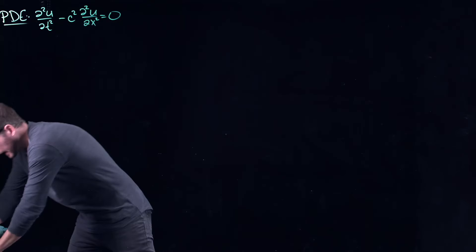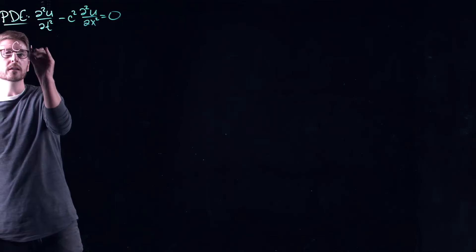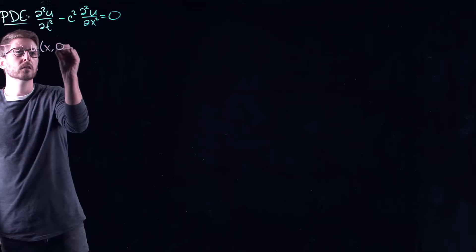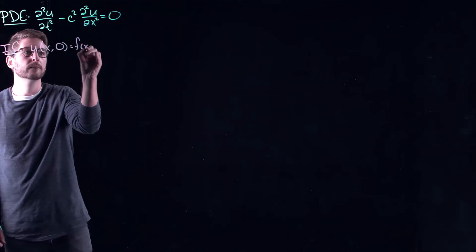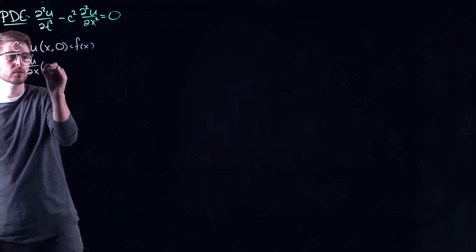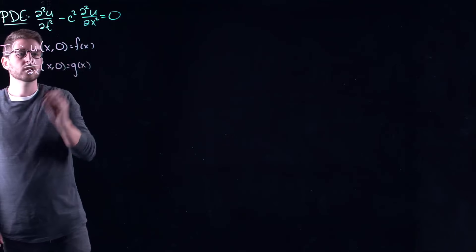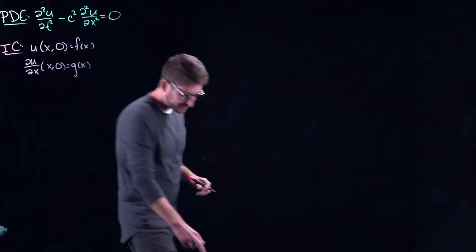And let's look again at the wave equation. We need initial conditions: u(x,0) equals f(x) and partial u partial t at t=0 equals g of x here.